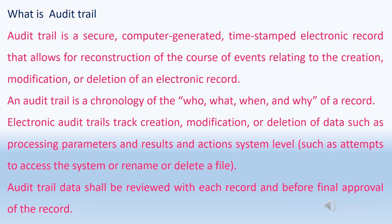What is an audit trail? An audit trail is a secure, computer-generated, time-stamped electronic record that allows for reconstruction of the course of events relating to the creation, modification, or deletion of an electronic record. An audit trail is a chronology of who, what, when, and why of a record. Electronic audit trails track creation, modification, or deletion of data such as processing parameter changes, results, and actions at the system level.